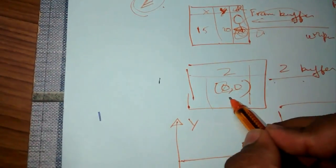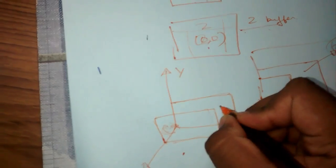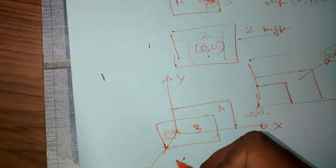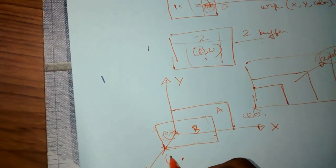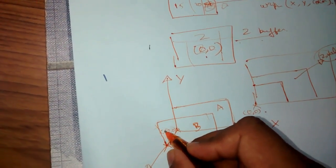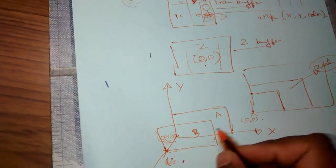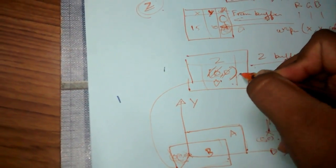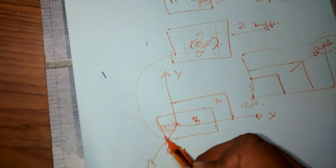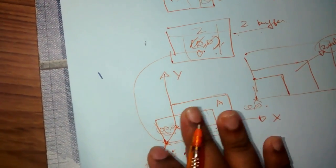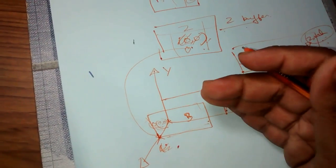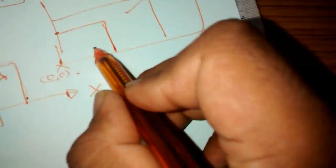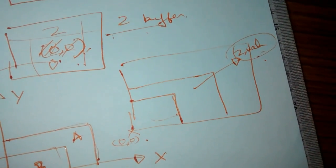If we store this and we also need to represent another figure — consider A and consider B — we need this Z value. Now take any value and store it here in the Z buffer; the previous value will be erased. Object B is upon Object A, so we need not want the Z axis of Object A, which appears something like this. We only need the Z axis of Object B.